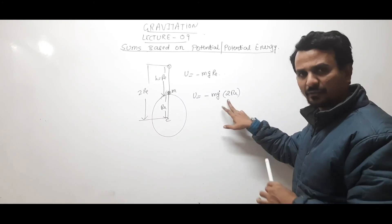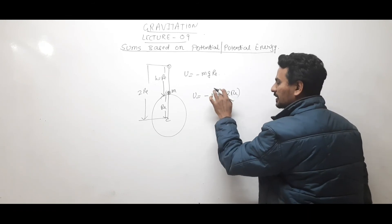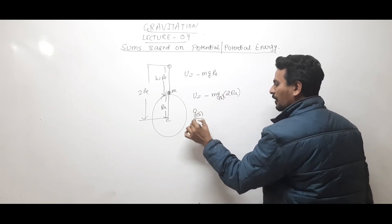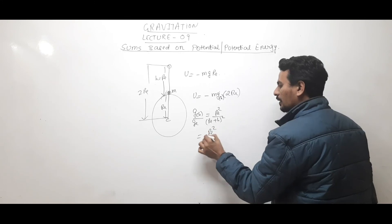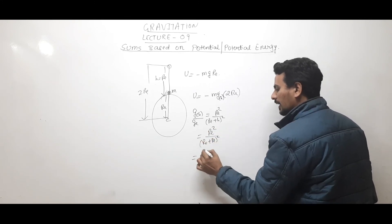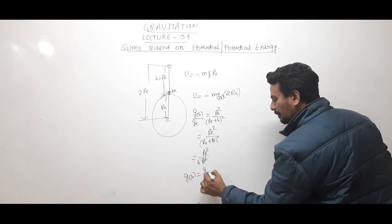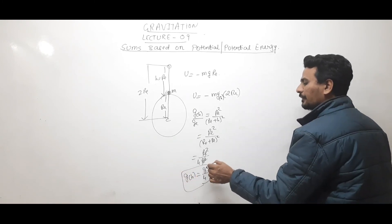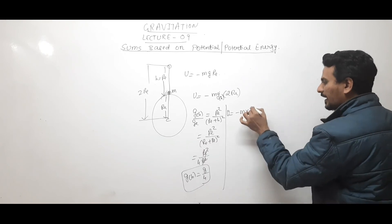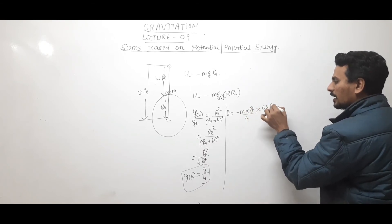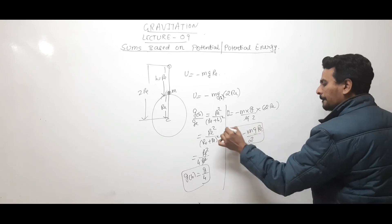Substituting into the potential energy formula: E = -m × (g/4) × 2Re = -mgRe/2. So the potential energy of mass m at height h = Re from the earth's surface is -mgRe/2.